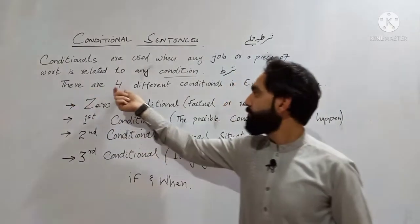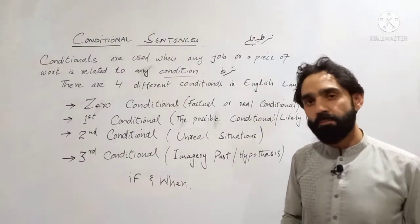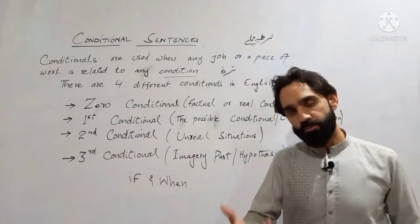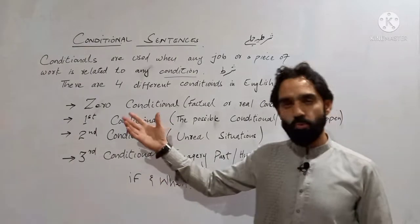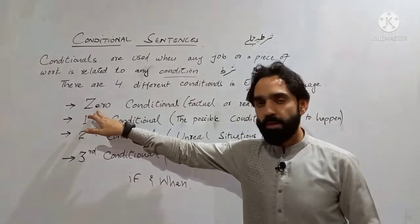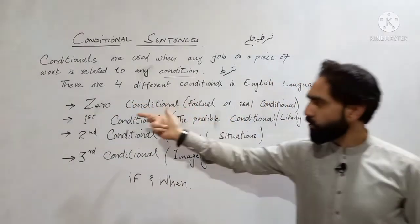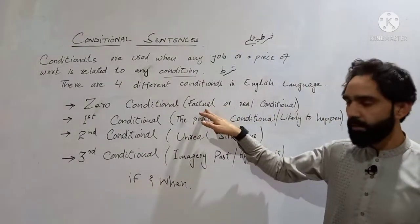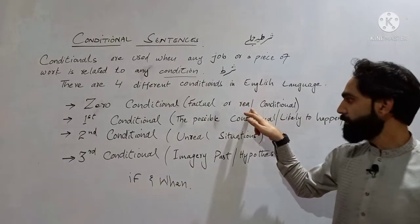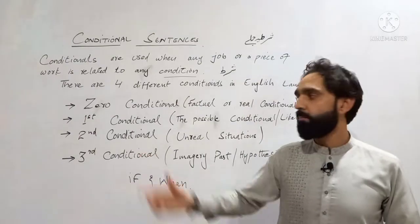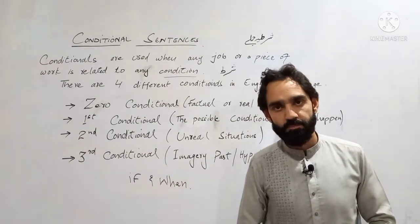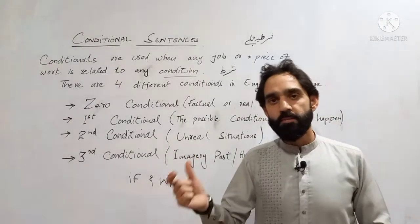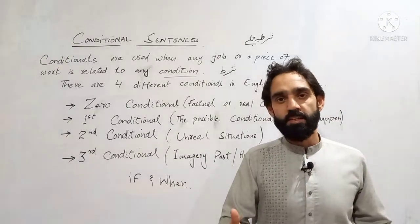There are four different conditions in the English language. انگریزی زبان میں چار مختلف طرح کے conditionals use کیے جاتے ہیں، اور of course they are not very difficult if you pay attention. سب سے پہلا zero conditional کہلاتا ہے — zero conditional کو ہم factual اور real conditional بھی کہتے ہیں۔ جب بھی ہم حقائق پر بات کریں گے تو ہم zero conditional کا استعمال کریں گے، جیسے: 'When the sun rises, it lightens the environment.'